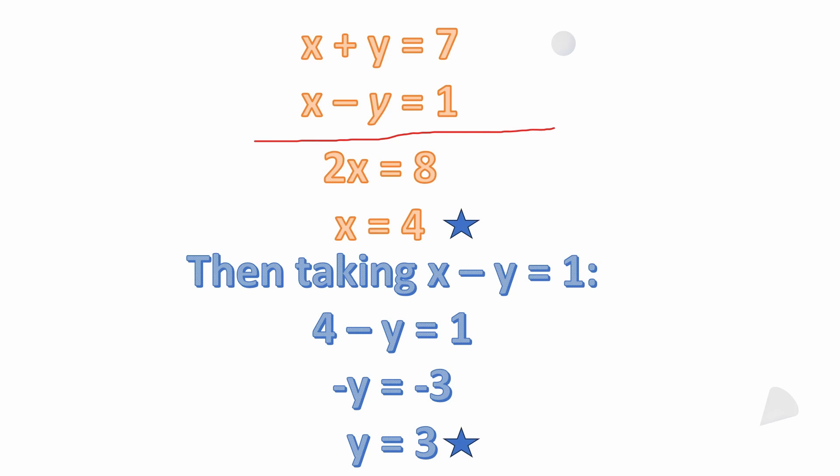If we add up x plus y equals seven and x minus y equals one: x plus x is two x, and plus y and minus y comes out to zero. We're left with two x on the left, and seven plus one is eight. So two x equals eight. We can divide both sides by two, leaving us with x equals four.